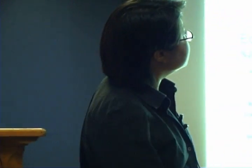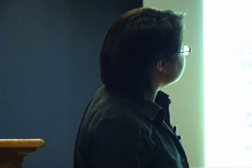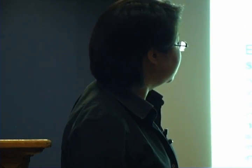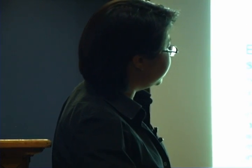Infectious diseases also represent a huge economic burden. This gives you a sense of what it costs when infectious diseases are not controlled — 14 billion dollars a year worldwide due to AIDS, though these statistics are a little old. Drug resistance costs about 4 billion dollars per year in the US. We actually save money when we control things like smallpox and polio. Cholera has been around for a long time — we think we control these things, but the burden is really quite impressive.